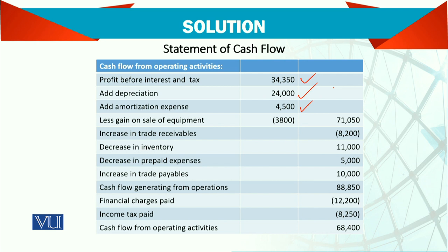Then we have working capital adjustments. Receivables are decreasing, which means we are collecting from them. Decrease in prepaid and decrease in inventory — inventory decreasing means we are selling and receiving money. Similarly, if prepaid expenses are reducing, it means we are getting money.